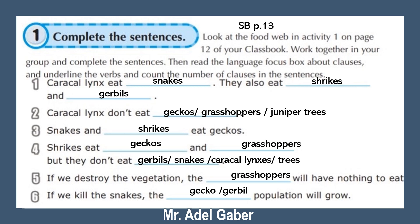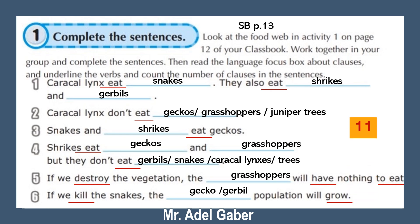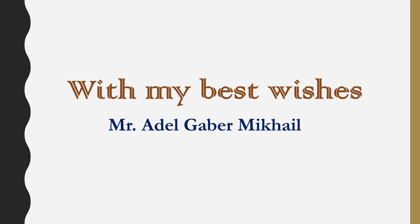Check your answers. Underline the verb in each clause and count the clauses. The answer is 11. Best wishes — I'm Adal Gaber. Goodbye and good luck.